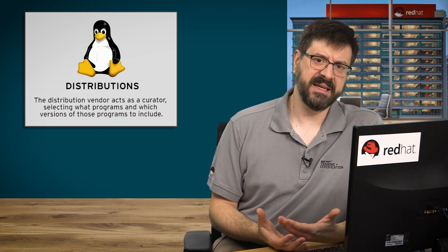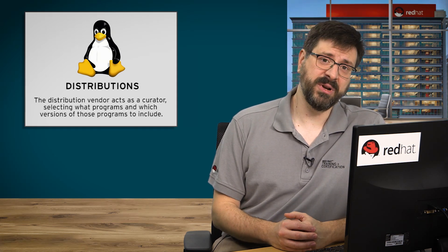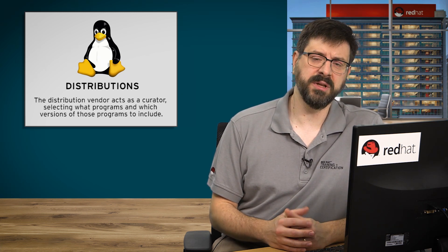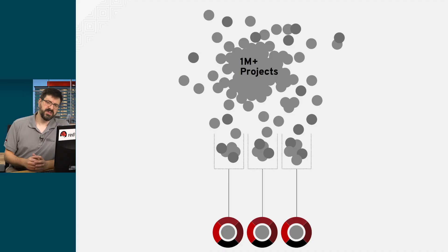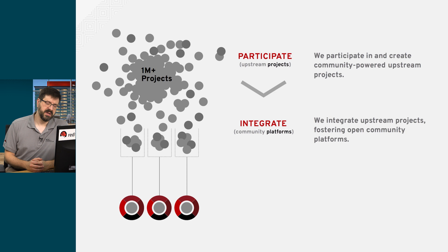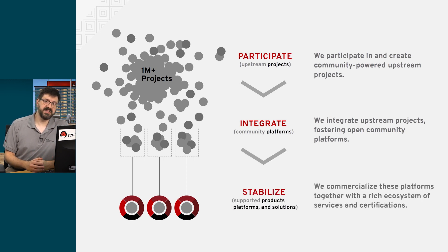They have to provide some way to easily install and update that software, and ideally some way to support it. They should be involved in the community that's developing those programs upstream. So the role of a distribution vendor is to look at the million-plus open source projects that are out there, be involved with them, integrate them into their products, and make sure they are sufficiently stabilized for their customer base. This is the basic model that Red Hat uses when putting together the distributions we're involved with.